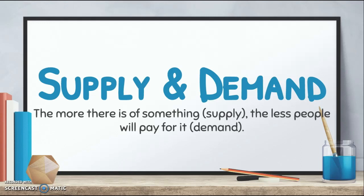The more of something there is — the higher the supply — the less demand people will have for that thing. Think of diamonds, for example. If there were super pure, beautifully cut diamonds just lying around in the grass all over the planet Earth, would you pay $1,000 for a diamond ring? Probably not, because you could just pick it up off the ground. Because diamond is so rare, it's expensive.